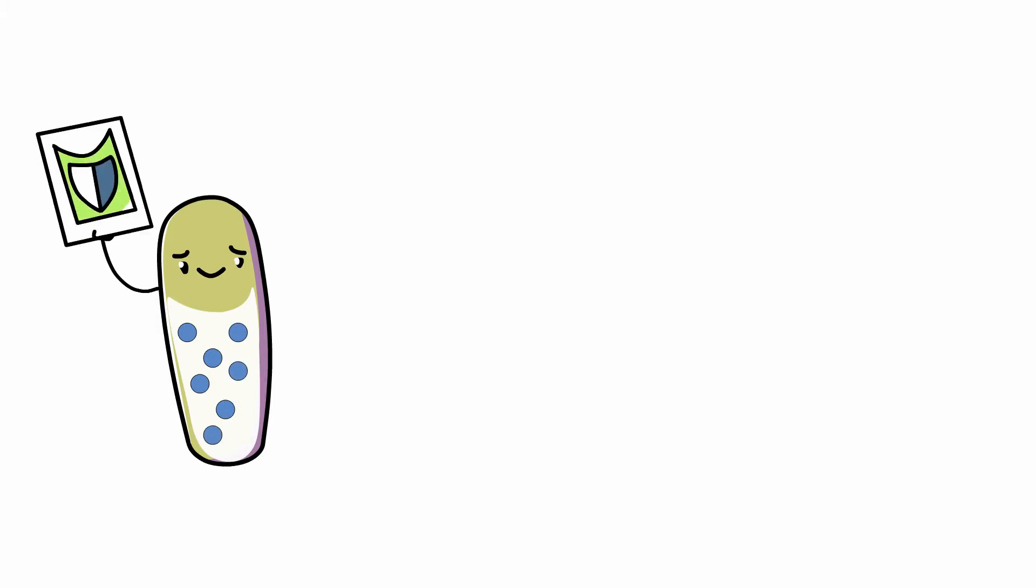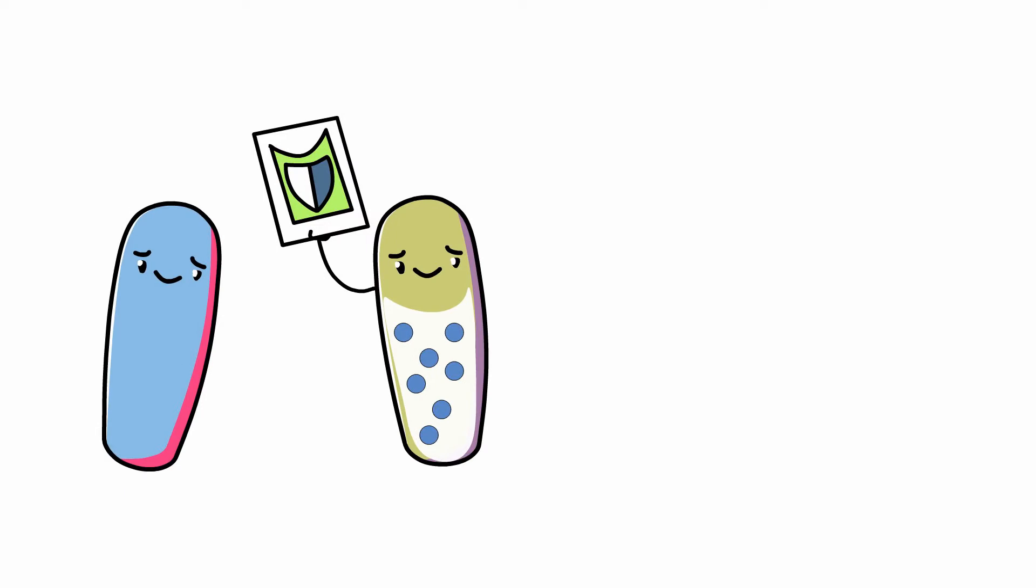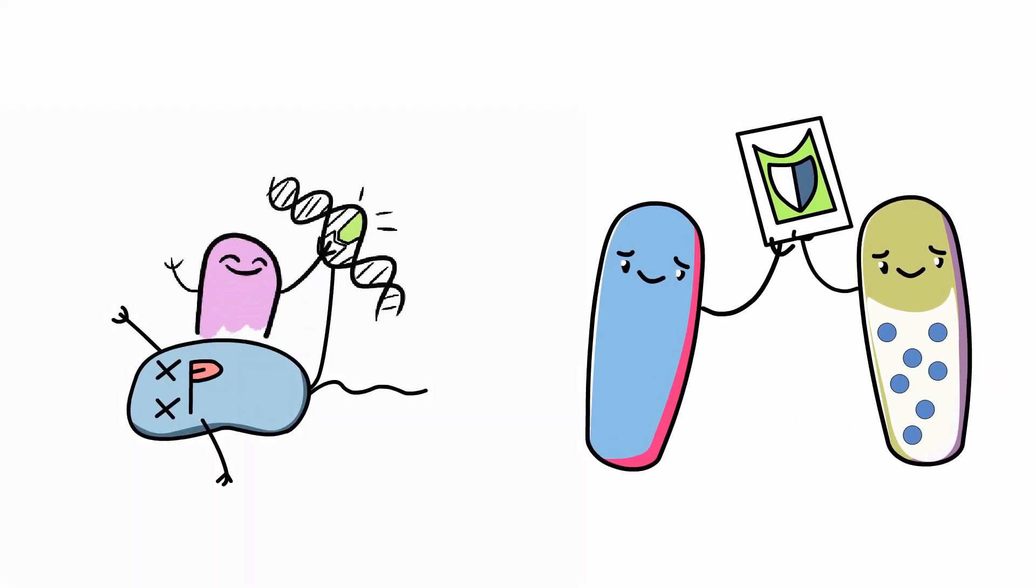Moreover, mutation is not the only way to acquire resistance. Bacteria themselves produce antibiotics and thus often carry genes encoding resistance proteins to protect them from their own antibiotics. Furthermore, resistance can be transferred from bacterium to bacterium, favoring the spread of resistance.